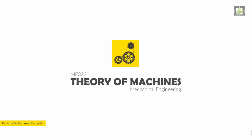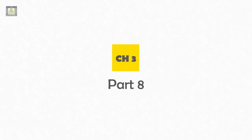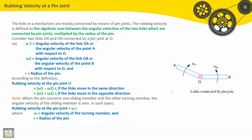Welcome to Part 8 of Chapter 3 of Theory of Machines. Here I will explain rubbing velocity at a pin joint.